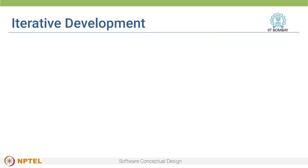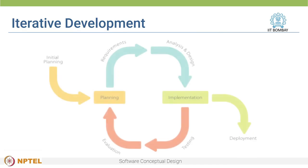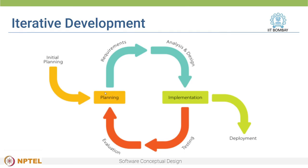Iterative software development is a model which is being used widely today. In this model, software projects are built using multiple iterations. For example, in the first iteration, the development team plans and builds features for key requirements. They deploy it and show it to the client and get their feedback. Even if the client wants changes, the team can quickly refine it in the next iteration. This process of development and refinement continues until the entire product is developed.